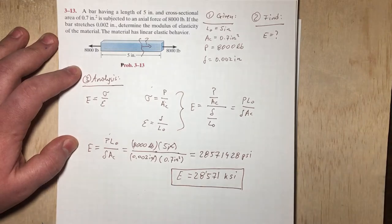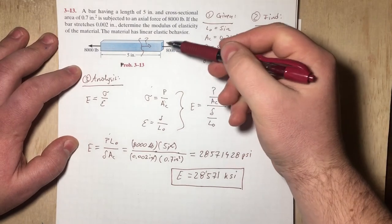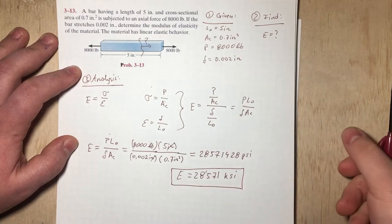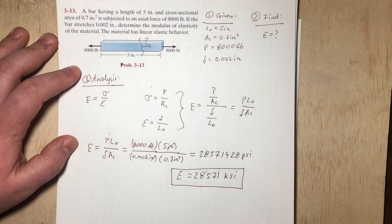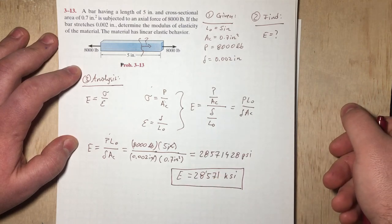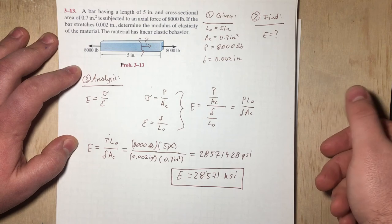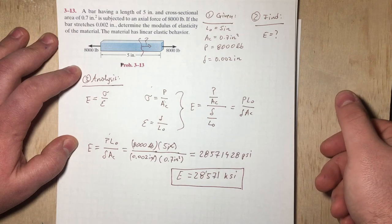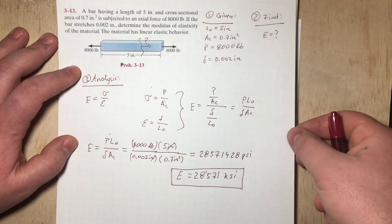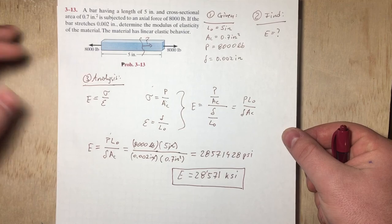This material looks like it's some sort of steel alloy. And our answer makes sense, because if you look at your table at the back of the book, you're going to be able to find something similar to this modulus of elasticity. So thank you very much for watching, and please let me know if you have any questions that I might help clarify, or if you have any additional questions that I could go over. Thank you. Have a great day.